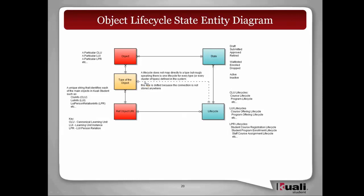Looking at the state entity diagram, there's a dotted line connecting the type of the object to the actual life cycle — which is the bag of states. That dotted line means there is no direct hard connection between the type of the object and the life cycle. Even if you have a particular type, there may be one life cycle no matter what the type is, or one life cycle for each different type, or one life cycle for a collection or grouping of types. Terms typically share a similar life cycle whether they're fall or spring, because fall and spring are close enough that they follow the same life cycle process.